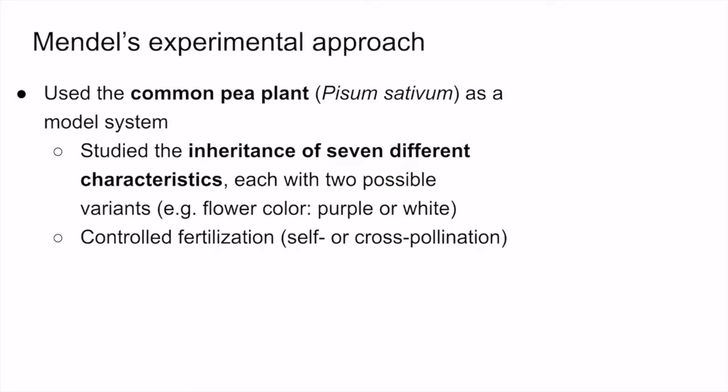Another reason why pea plants are beneficial is because it's easy to mate them in a controlled manner. Each pea flower has both pollen-producing male organs known as stamens, as well as an ovule-bearing female organ called a carpel. In order to pollinate flowers, Mendel transferred pollen grains — the male gametophytes — from the male stamen to the female carpel in order to fertilize the ovule and produce a zygote. The fertilized zygote then developed into a pea, which could be planted to generate the offspring of the mated plants. There are two different types of pollination: self-pollination and cross-pollination.